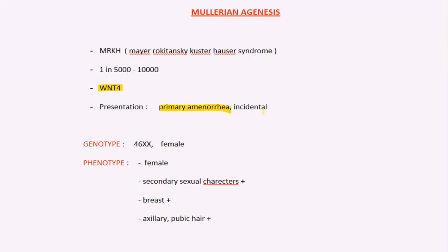In some cases it is an incidental finding — for example, when operating for a hernia or an acute abdominal case, you incidentally find there is no uterus or no upper part of the vagina. In some cases, patients may even present with difficulty in sexual intercourse.